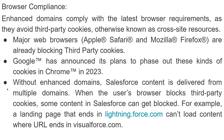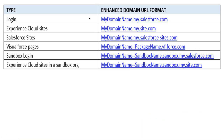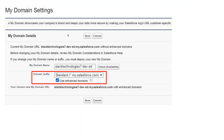Without enhanced domains, Salesforce content delivered from multiple domains means users' browsers block third-party cookies, and some content in Salesforce can get blocked — for example, a landing page on lightning.force.com may not load content correctly from another Salesforce domain. To enable enhanced domains, as discussed, go to My Domain setup and click 'Use Enhanced Domain.'